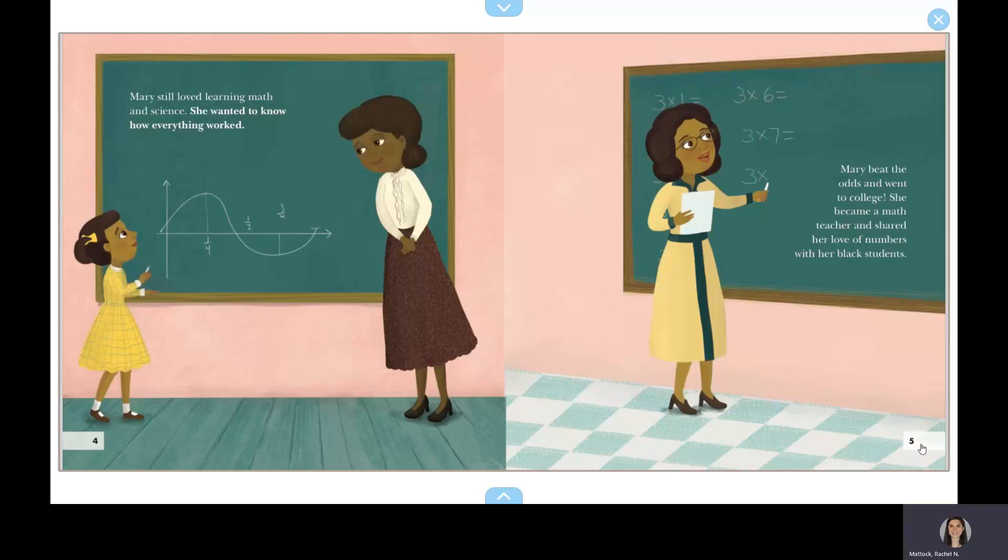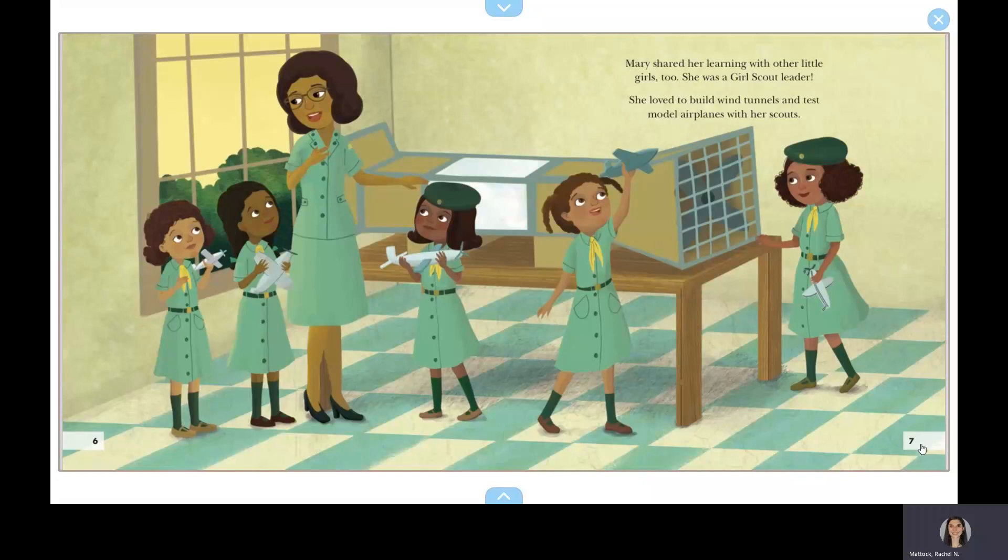Mary still loved learning math and science. She wanted to know how everything worked. Mary beat the odds and went to college. She became a math teacher and shared her love of numbers with her Black students. Mary shared her learning with other little girls, too. She was a Girl Scout leader. She loved to build wind tunnels and test model airplanes with her Scouts.